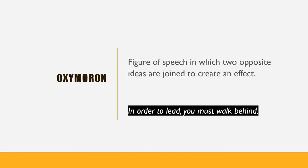Oxymoron is a figure of speech in which two opposite ideas are joined to create an effect. The common oxymoron phrase is a combination of an adjective preceded by a noun with contrasting meanings, such as 'cruel kindness' or 'living death.' However, the contrasting words or phrases are not always glued together — the contrasting ideas may be spaced out in a sentence, such as the example: 'In order to lead, you must walk behind.'